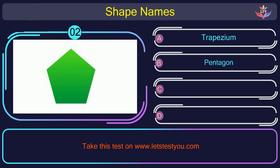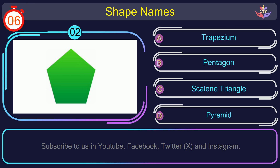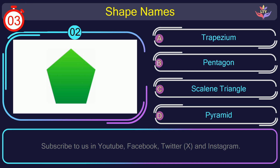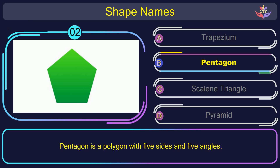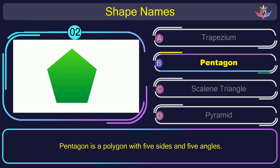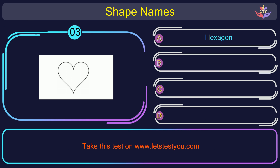Question number 2. Guess the name of the shape in this picture. The correct answer is option B. Pentagon. Pentagon is a polygon with five sides and five angles.